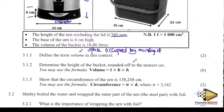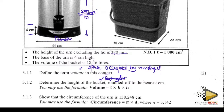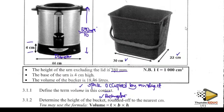Determine the height of the bucket, rounded off to the nearest centimetre — this is worth six marks. The bucket is rectangular. They've given us the formula to use. Ask yourself: do you have the volume of the bucket? We already have the breadth and the length — the height is missing. This part here, from top to bottom, is what is missing.